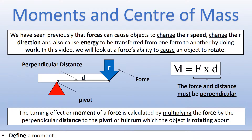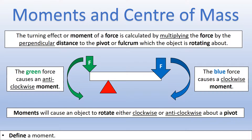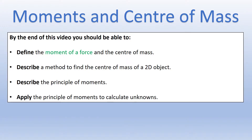Let's look at how we describe the difference between moments. If we have two forces acting on an object with a pivot, the green force is causing the object to rotate anti-clockwise and the blue force is causing it to rotate clockwise. So we describe the green force as having an anti-clockwise moment and the blue force as having a clockwise moment. That covers what a moment is and how you describe it in terms of being clockwise or anti-clockwise.